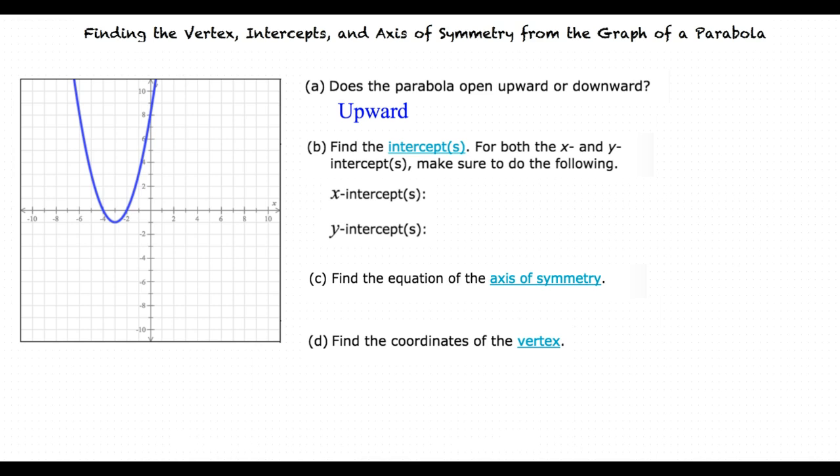For part B, we're being asked to find both the x and y-intercepts. Why don't you go ahead and give this one a shot, too? Okay. I know that for the x-intercepts, we are looking for where the graph crosses the x-axis. So would the x-intercepts be negative 4 and negative 2? Yes, that's correct. The x values, negative 4 and negative 2, are where our parabola crosses the x-axis.